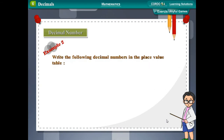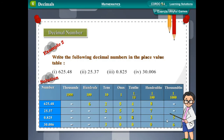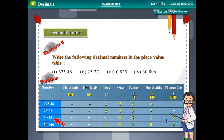Example 2: Write the following decimal numbers in a place value table: 625.48, 25.37, 0.825, and 30.006. For 625.48: 6 in hundreds, 2 in tens, 5 in ones, 4 in tenths, 8 in hundredths. For 25.37: 2 in tens, 5 in ones, 3 in tenths, 7 in hundredths. For 0.825 and 30.006, the digits are similarly placed in their respective columns including thousands, tens, ones, tenths, hundredths, and thousandths.